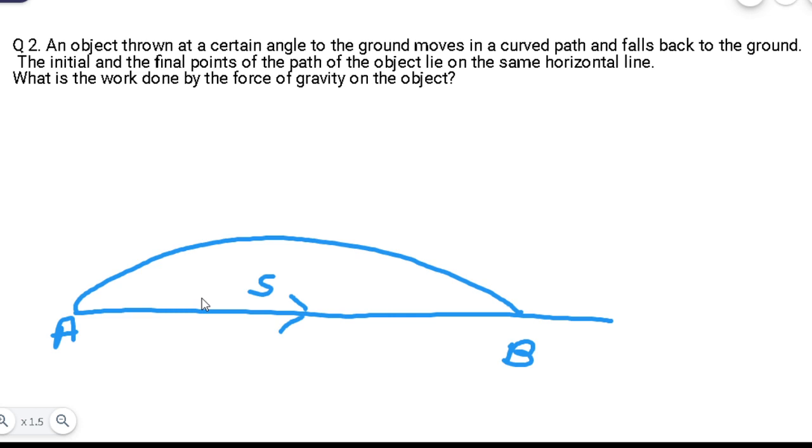जो उसका weight है, वो कहां लगेगा - vertically downward, इस प्रकार से. तो यह force हो गया, और यह displacement हो गया. यह angle हमेशा कितना बनेगा - this angle is always 90 degrees.